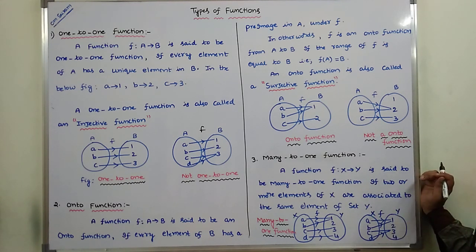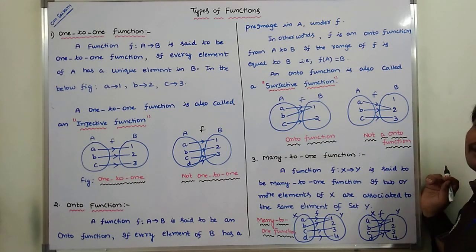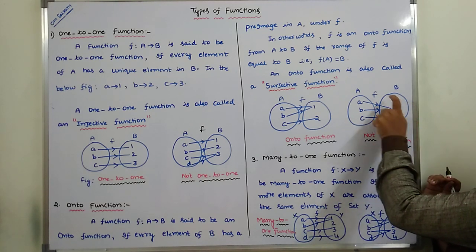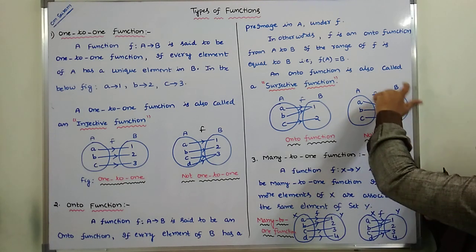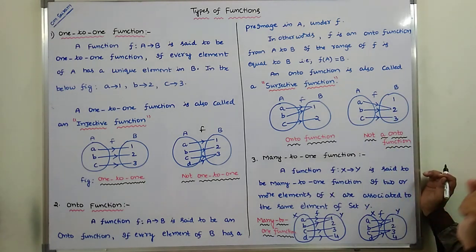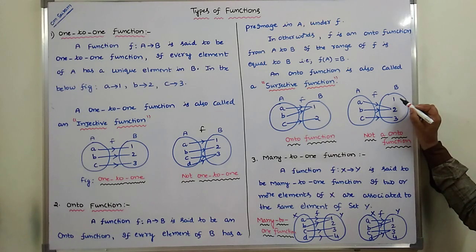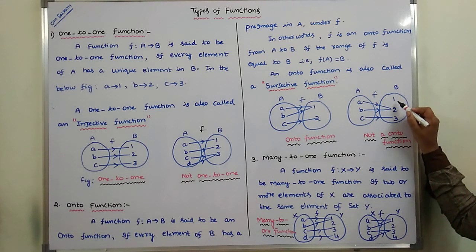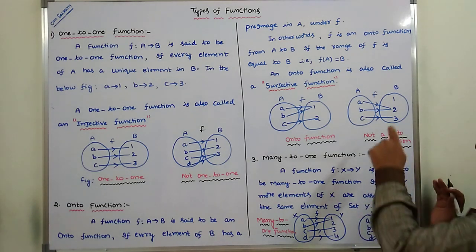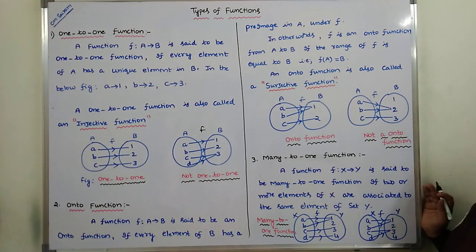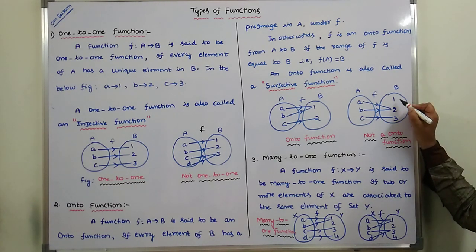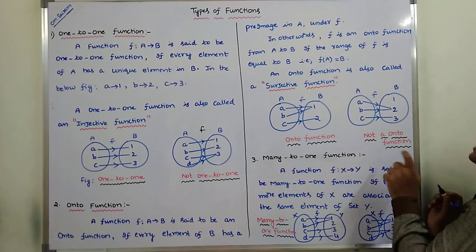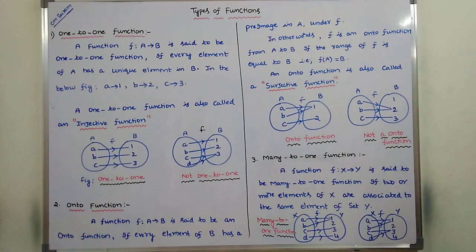Onto function is also called a surjective function. Now check whether this next function is an onto function or not. Here, element 1 in set B does not have a pre-image in set A. According to the definition, every element of set B must have a pre-image in set A. But element 1 does not have one. Hence we can say that it is not an onto function.